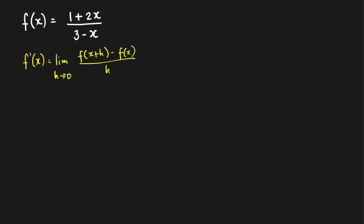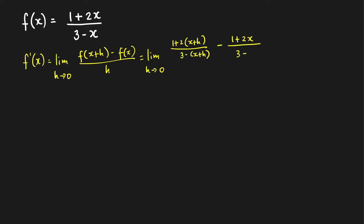Now we use the definition of the function. So this is equal to limit as h approaches 0 — f of x plus h is just equal to 1 plus 2 times x plus h, over 3 minus x plus h. You need a grouping symbol here. A common mistake is to forget the grouping symbol, because it is preceded by a minus sign. And then minus f of x, which is 1 plus 2x over 3 minus x, all over h.